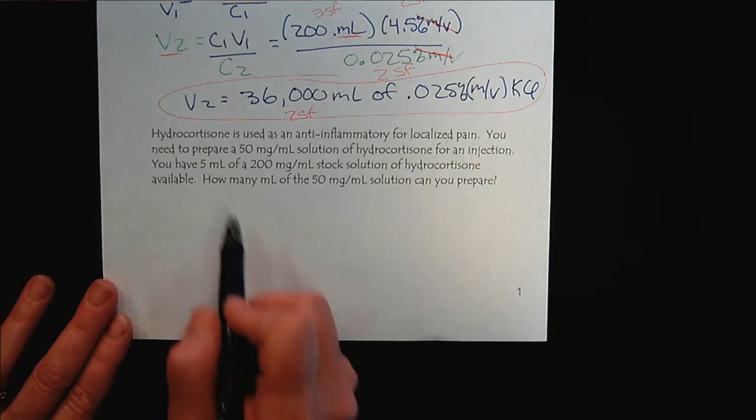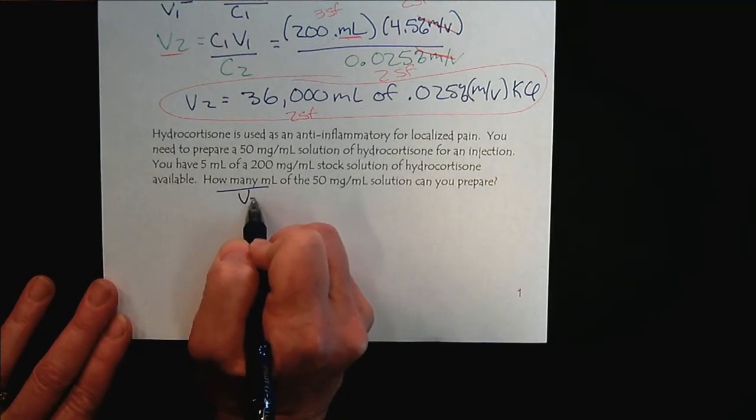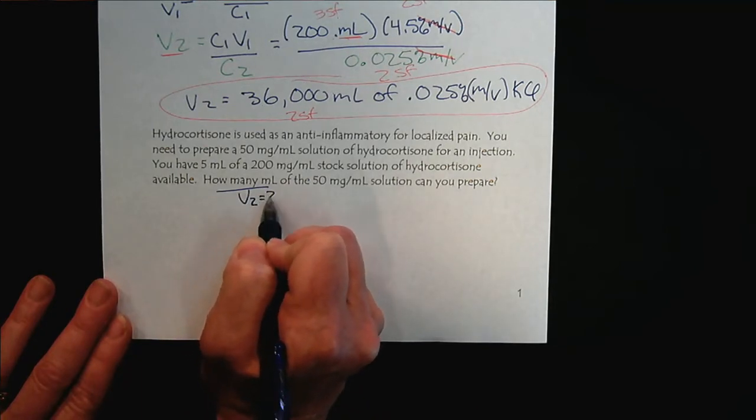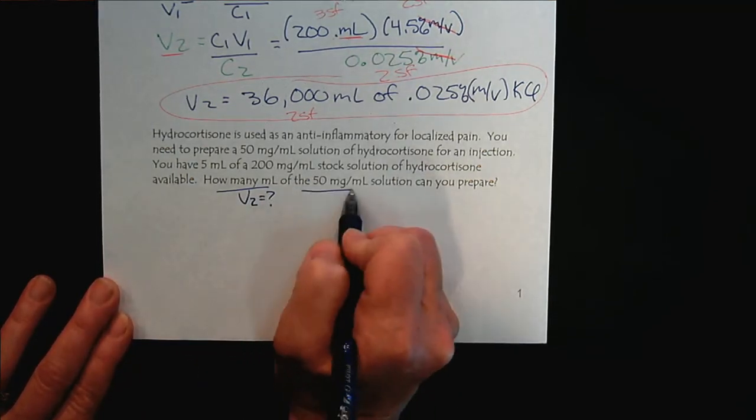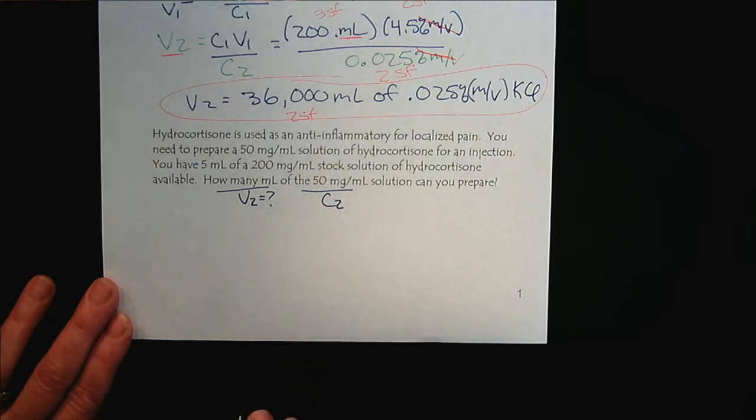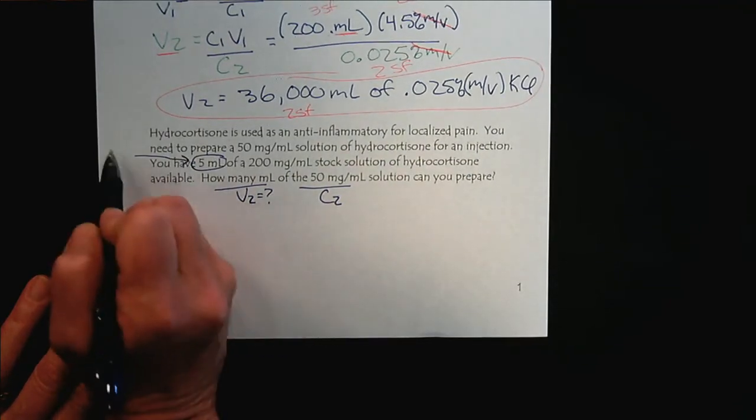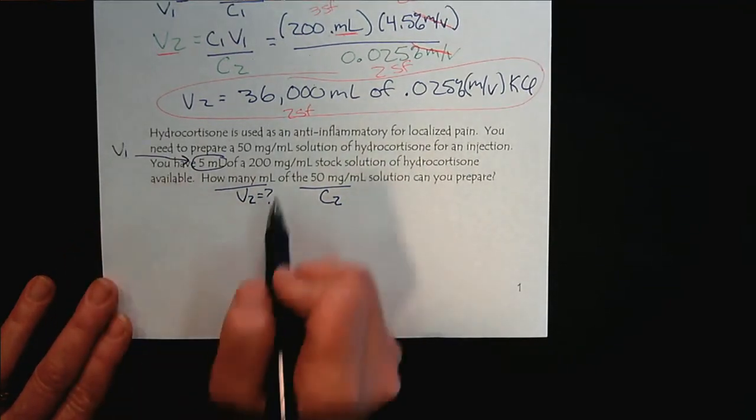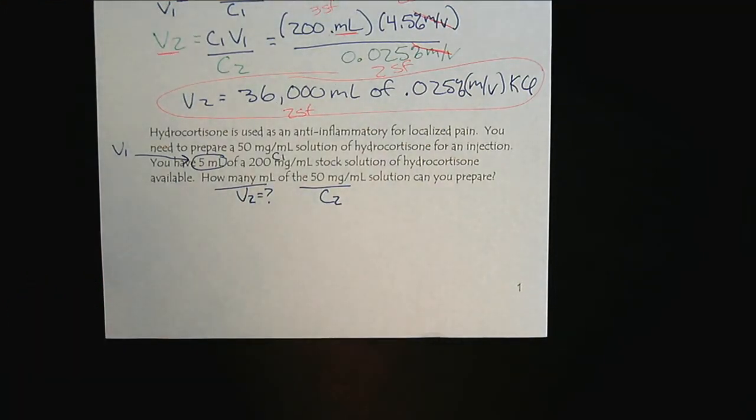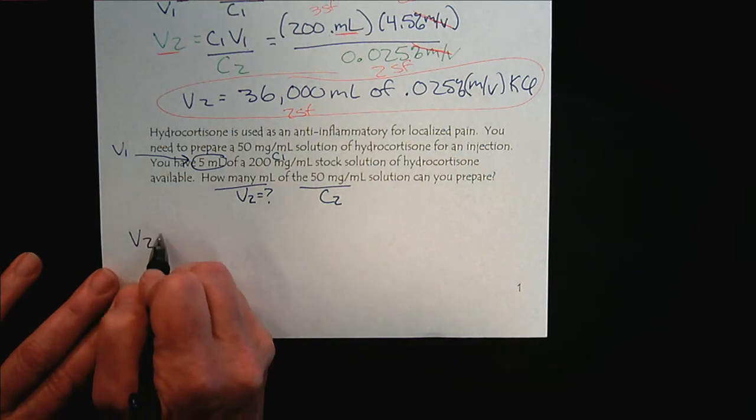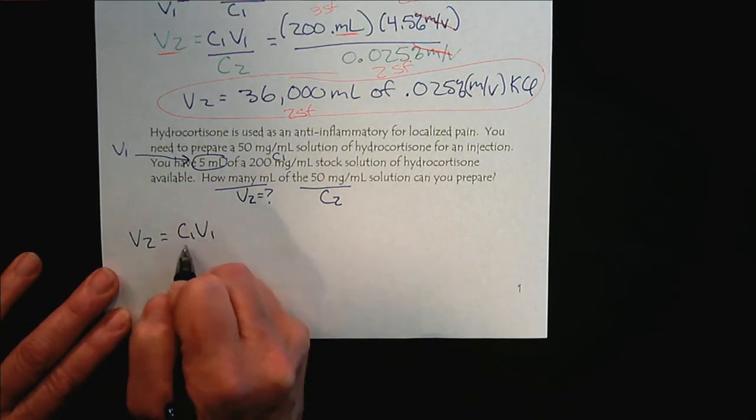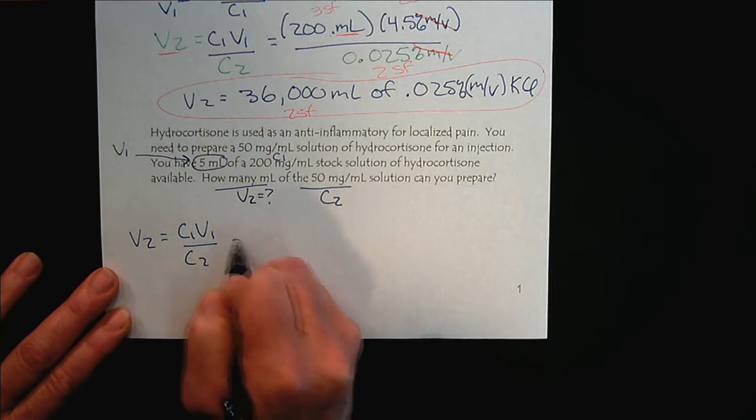How many milliliters? There it is again. There's the volume we're not sure about. This is the concentration we need to prepare. What do we have? We have 5 milliliters. There's our V1. And then there's our C1. The algebra hasn't changed. V2 is still calculated the same way. We're back to plug and chug.